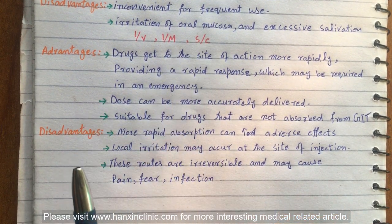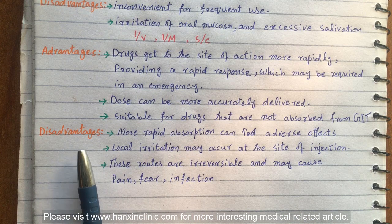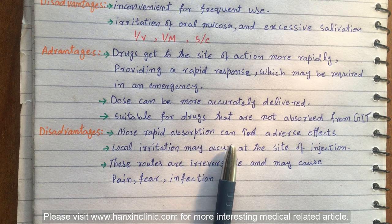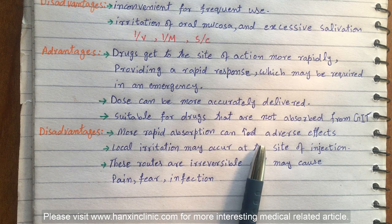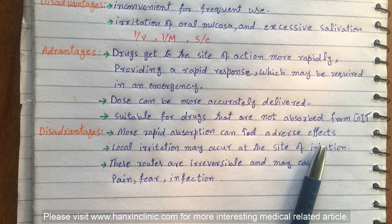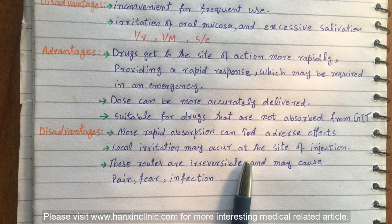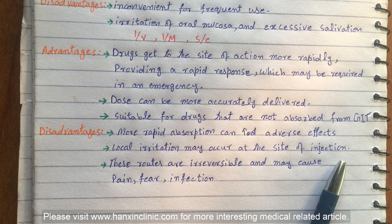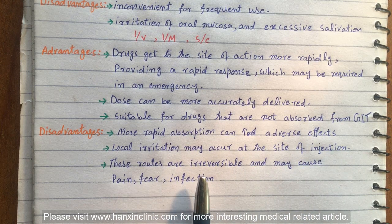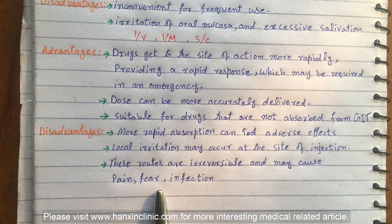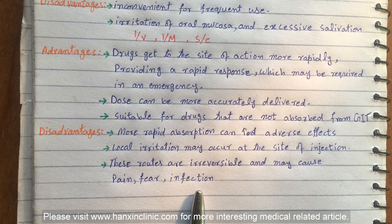The disadvantages of intravenous, intramuscular, and subcutaneous routes include: more rapid absorption can increase adverse effects; local irritation may occur at the site of injection; these routes are irreversible; and they may cause pain, fear, and infection.